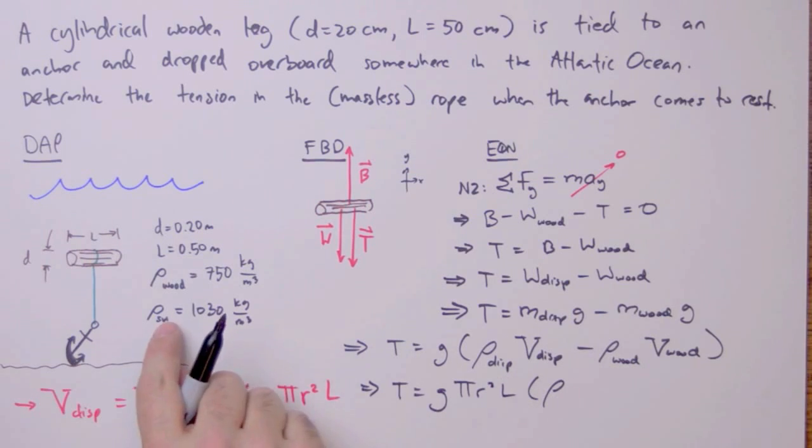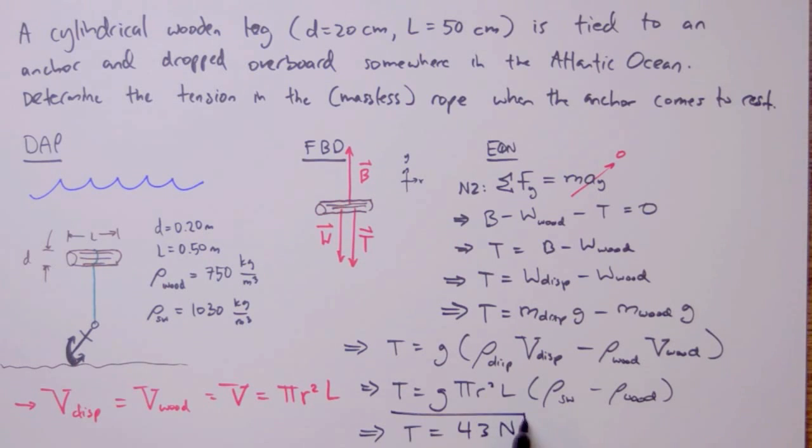And the displaced fluid is salt water. So I'll substitute that in. And that in. And there we are. We've solved it for T. We have all of these variables. All we need to do is plug in our initial conditions. And doing so, we'll yield a value of 43 Newtons for tension.